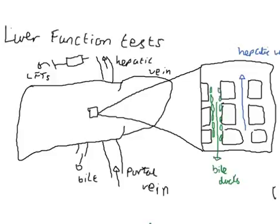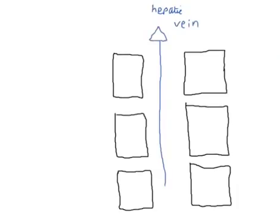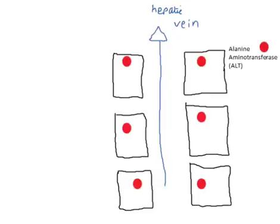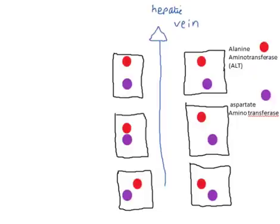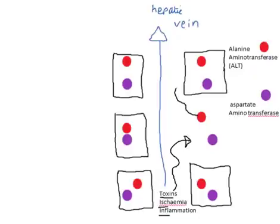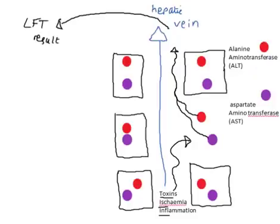Zooming in a little closer at the hepatocytes lining the sinusoid: inside the hepatocytes there are lots of enzymes involved in liver function. These include ALT, or alanine aminotransferase, and AST, or aspartate aminotransferase. Any number of stimuli can damage these hepatocytes, causing their death and the release of these enzymes into the hepatic circulation. This reaches the systemic circulation to be measured in our blood test, giving an LFT result of a raised ALT and raised AST due to hepatocyte damage.